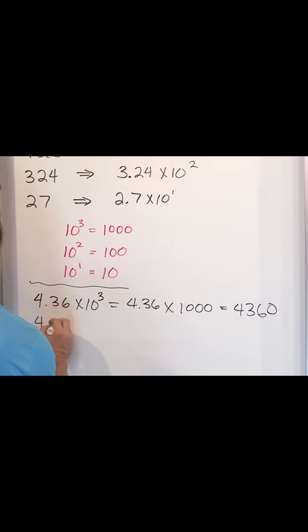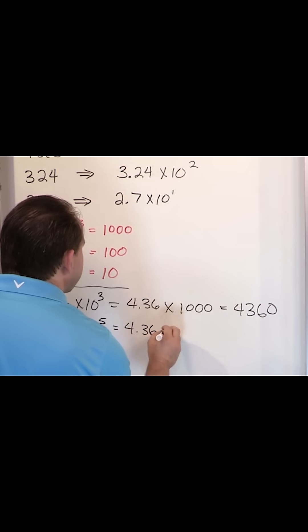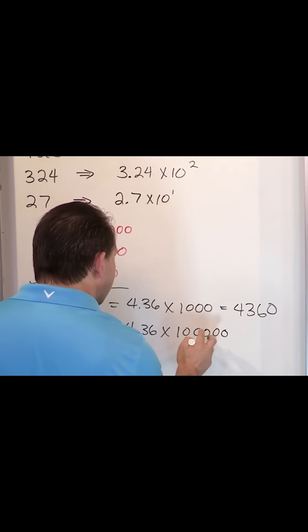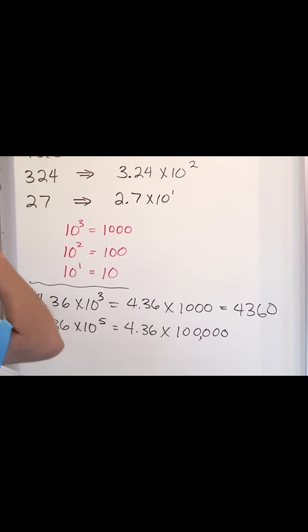If it was 4.36 times 10 to the fifth power, what would it be? It would be 4.36 times 100,000, because 10 to the fifth means we're not multiplying by 1,000, we're multiplying by 100,000, because there's two more zeros there.